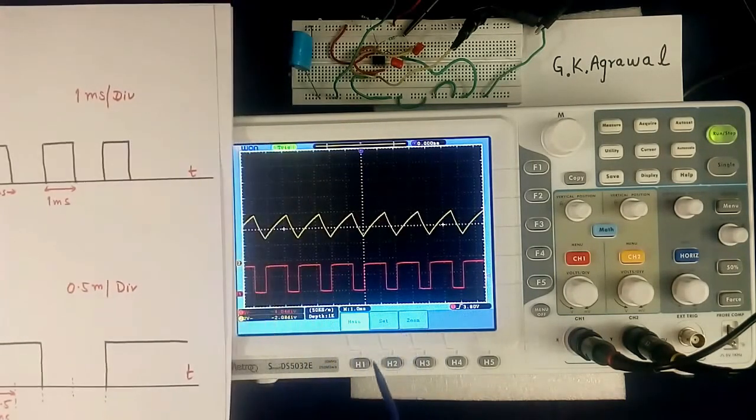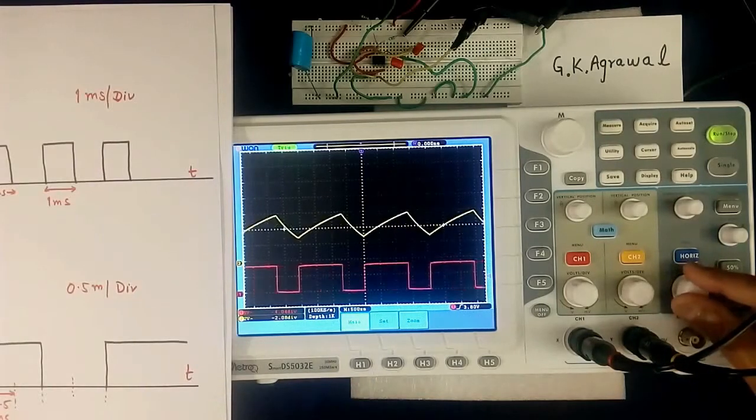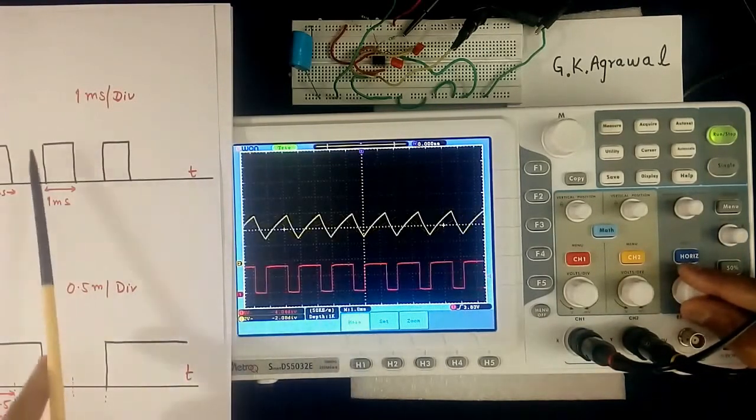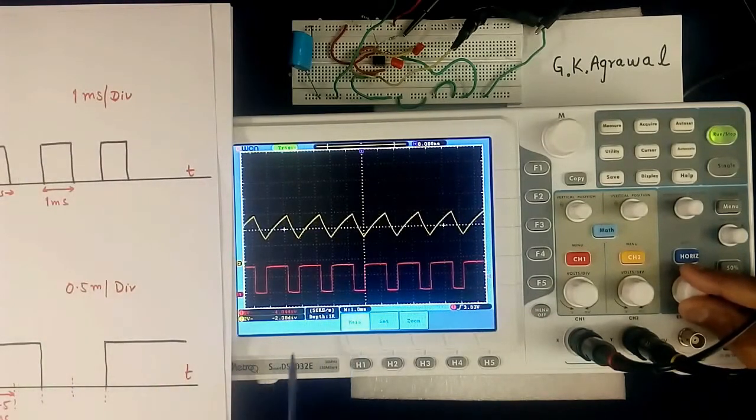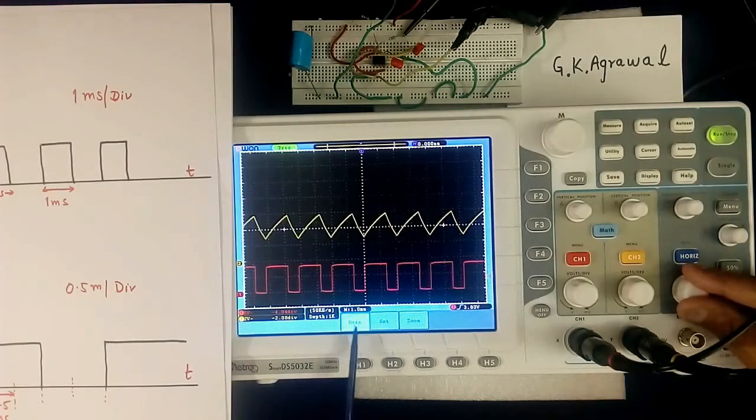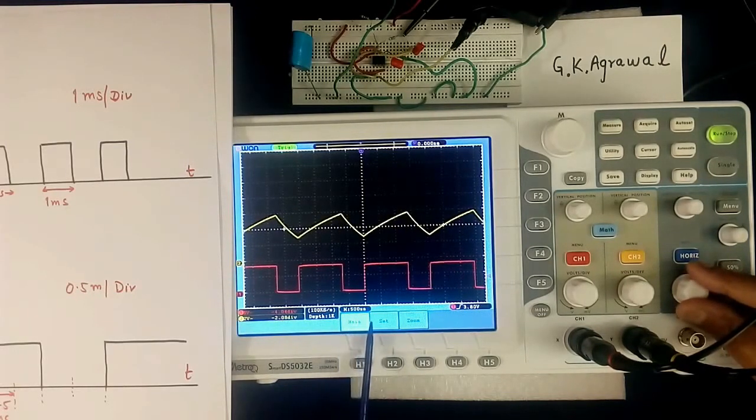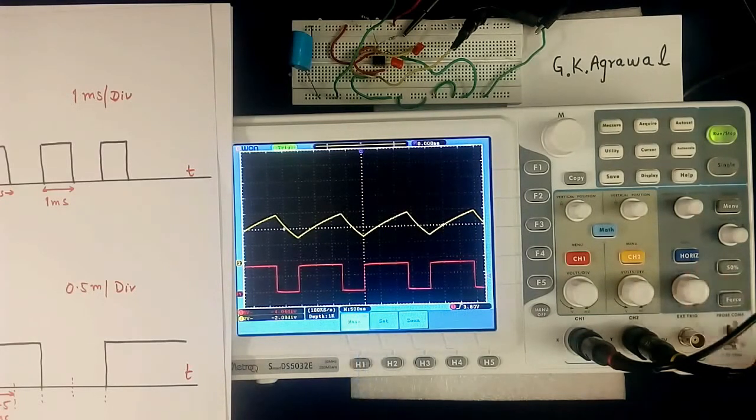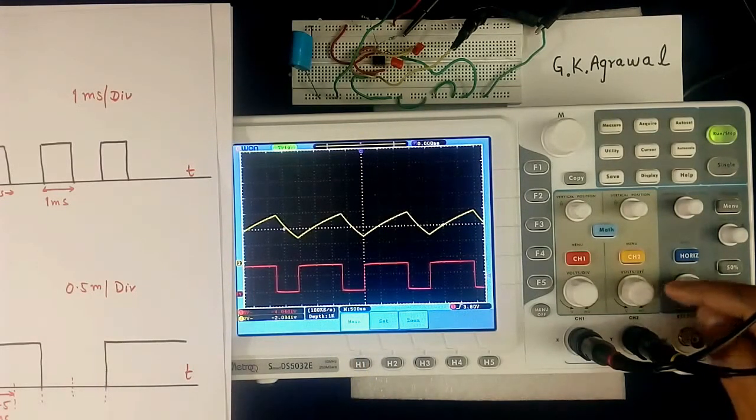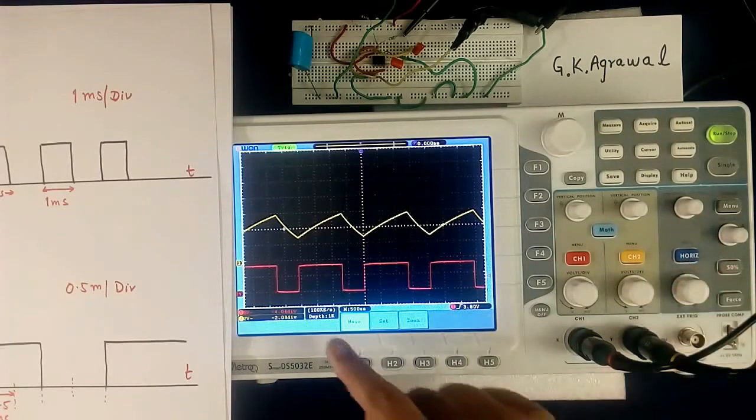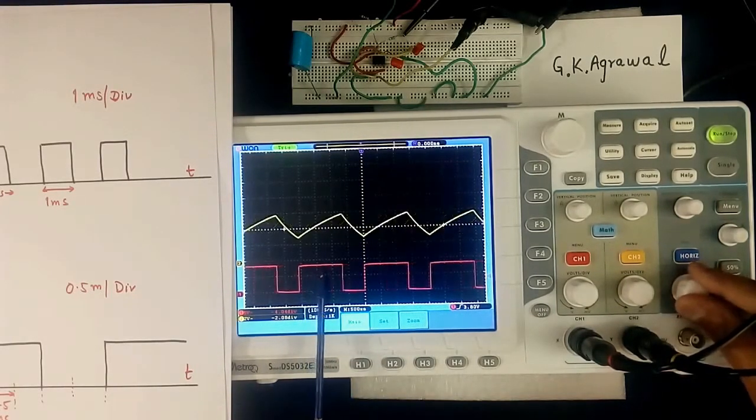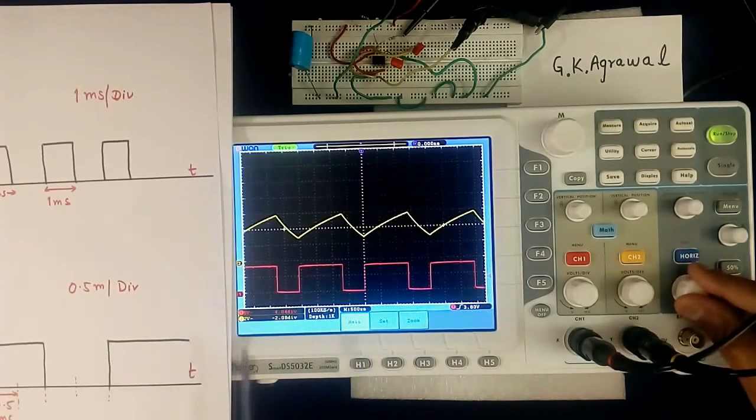Here I will show. See both are shifted. Now earlier this was something like this and here it was 1 ms per division. Now I have made 0.5 ms per division, that is 500 microseconds per division. In your scope this division may be here, in my case it is written here.